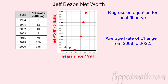Looking at his net worth over time, he was increasing, then had a decrease, then started increasing again. Roughly it looks something like this. What kind of shape is that? It looks kind of like a cubic function, so we're going to try to model his net worth over time with a cubic function. To do that, we're going to put the data in the calculator, and I don't want to use the raw years.